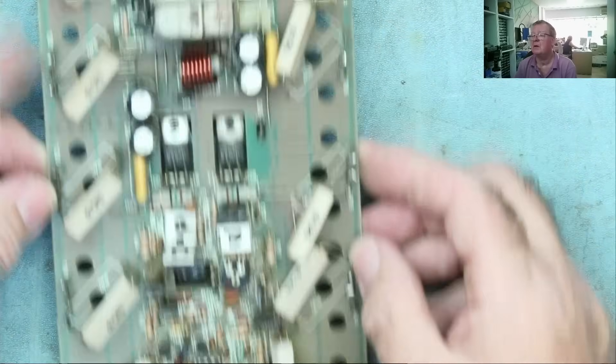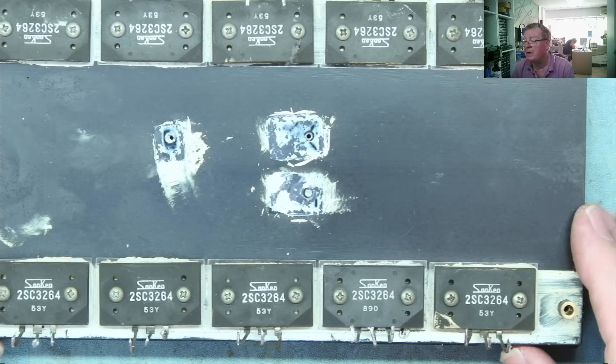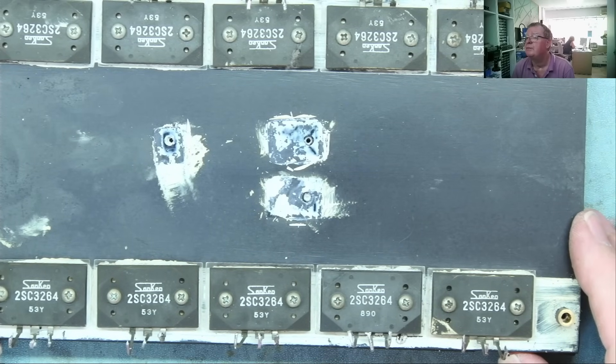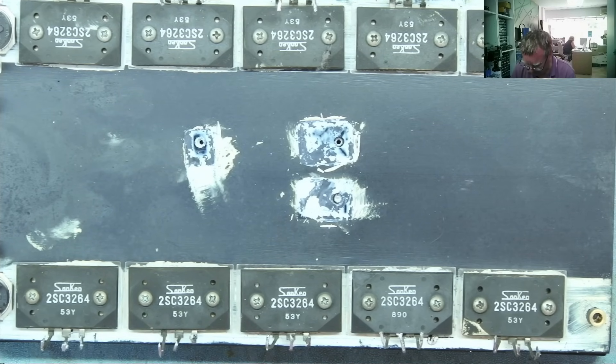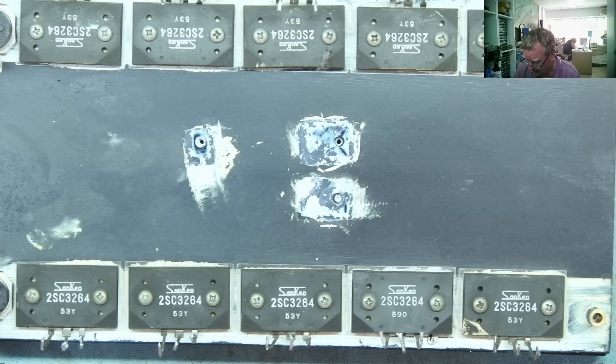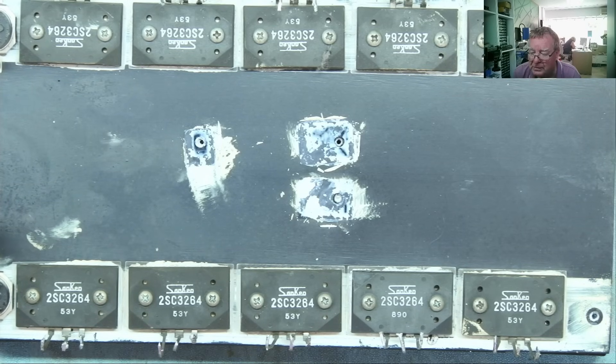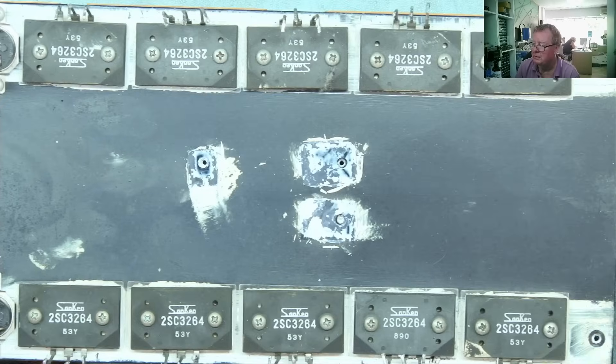These are the output devices - I can see 2SC3264, they're all the same. So this is one of these pseudo class AB amplifiers which probably has all NPN transistors. The way this works, as I recall, is this inverts the phase to the base drive of what would normally be the PNP side of the amplifier, something like that.